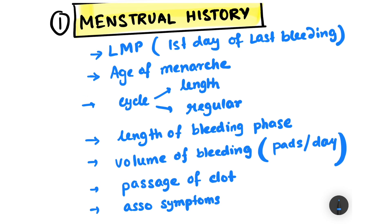To summarize the menstrual history: you take the last menstrual period date — the first day of the last bleeding phase — then the age of menarche, the cycle length and regularity, the length of the bleeding phase, the volume of bleeding in terms of pads or tampons per day, passage of clots, and finally any associated symptoms.